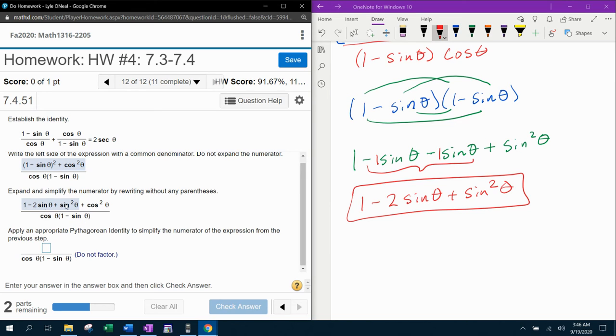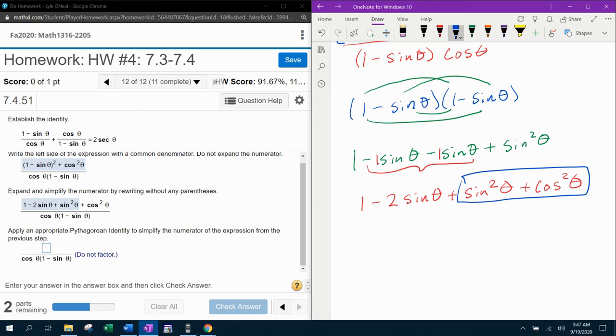Apply an appropriate Pythagorean identity to simplify the numerator of the expression from the previous step. So notice in the numerator there are no parentheses and there are one, two, three, four terms. There's four terms in the numerator. And so if I write this down over here, this is our numerator plus cosine squared theta.